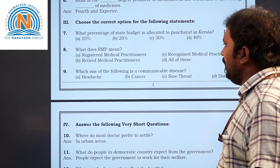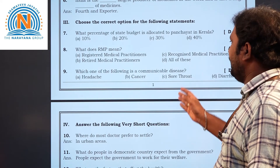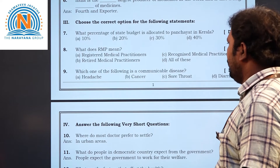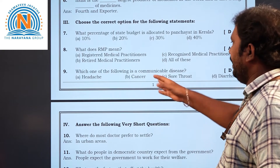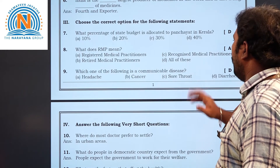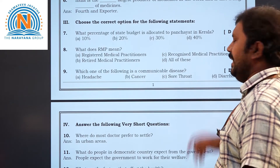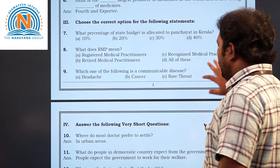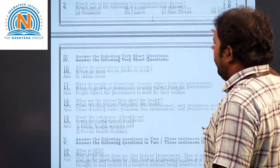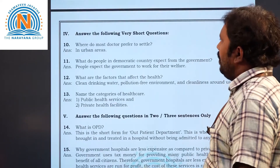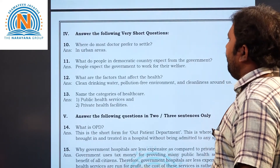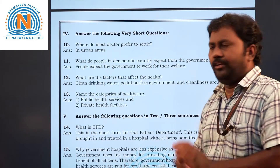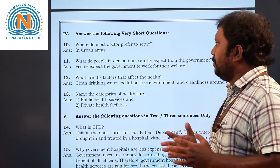Ninth question: which one of the following is a communicable disease? The options are headache, cancer, sore throat, and diarrhea. The correct answer is option D — diarrhea.